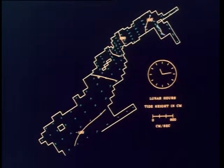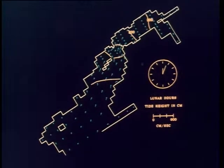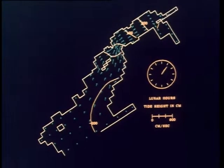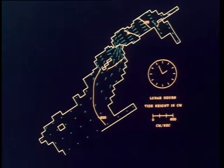In Upper Cook Inlet, as the ebb begins, the contour lines no longer lie directly across the inlet. This is a result of the Coriolis effect.